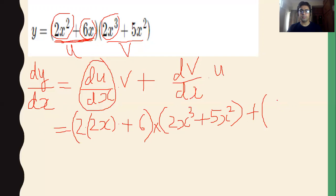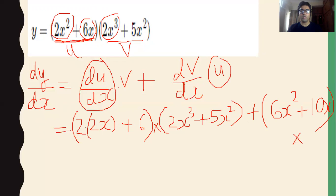Differentiating v, you get 6x² plus 10x. So dv/dx is found. Into this, we treat the other function as a constant, so we multiply u as it is, which is 2x² plus 6x. Multiply this as it is.